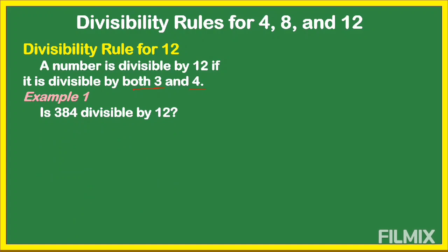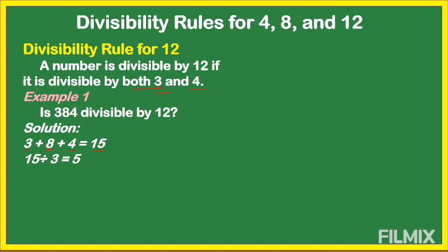For example, is 384 divisible by 12? Let's check. First, we're going to add all the digits to check whether it is divisible by 3: 3 plus 8 is 11, plus 4 is 15. Is 15 a multiple of 3? The multiples of 3 are 3, 6, 9, 12, 15 — yes. 15 divided by 3 equals 5. So 384 is divisible by 3.